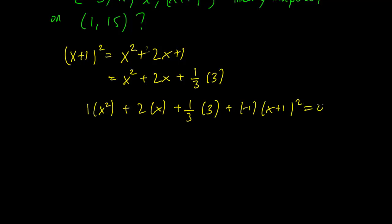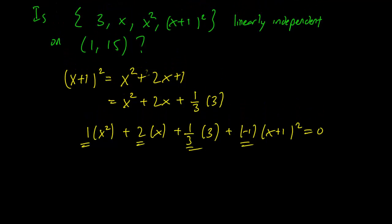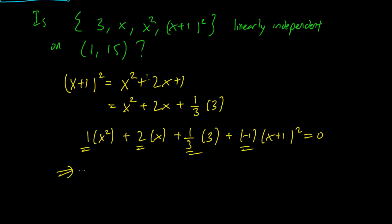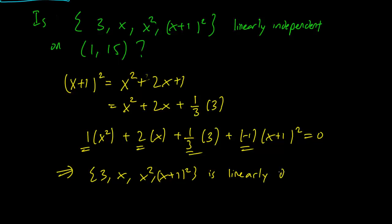And this is going to be equal to 0. So given these constants — and these constants aren't all zero — we are forced to conclude that 3x, x squared, (x+1) squared is linearly dependent.